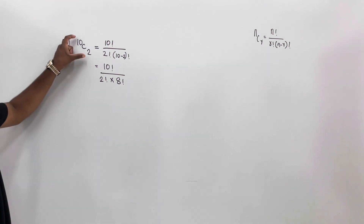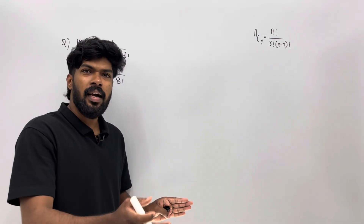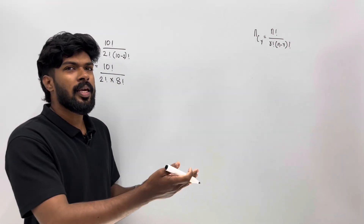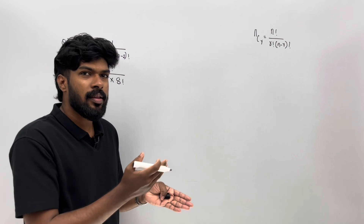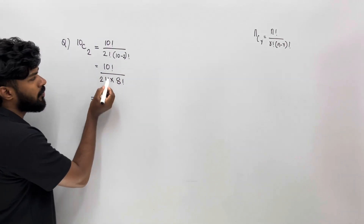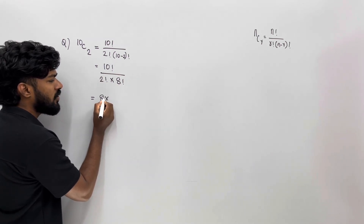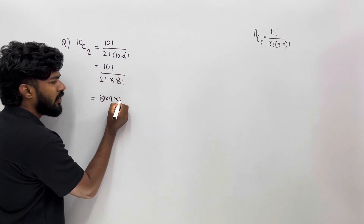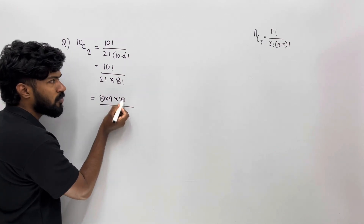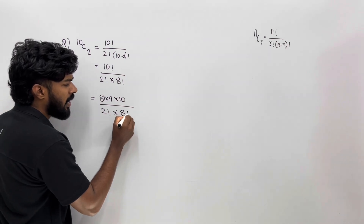If we take 10C2, we have to check the answer. If we have done it, we will check the answer. We take 10C2 and mark it. How do we take 10 factorial? If we take 10 factorial into 8 factorial, the next part is 8 factorial into 9 into 10. So we have to expand 10 factorial into 2 factorial into 8 factorial.